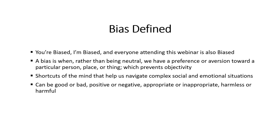Just because we're all biased, let me make this next statement: biases can be good or bad, positive or negative, appropriate or inappropriate, harmless or harmful. Biases are essential to our survival — we need to make those quick assessments and quick judgment calls. If you see a person wielding a weapon, you're not going to pause and process the situation. You're going to rely on your biases: a weapon is harmful, I need to run, I need to protect myself. Therefore, biases are essential to our survival, and they can be good, bad, positive, negative, appropriate, or inappropriate.